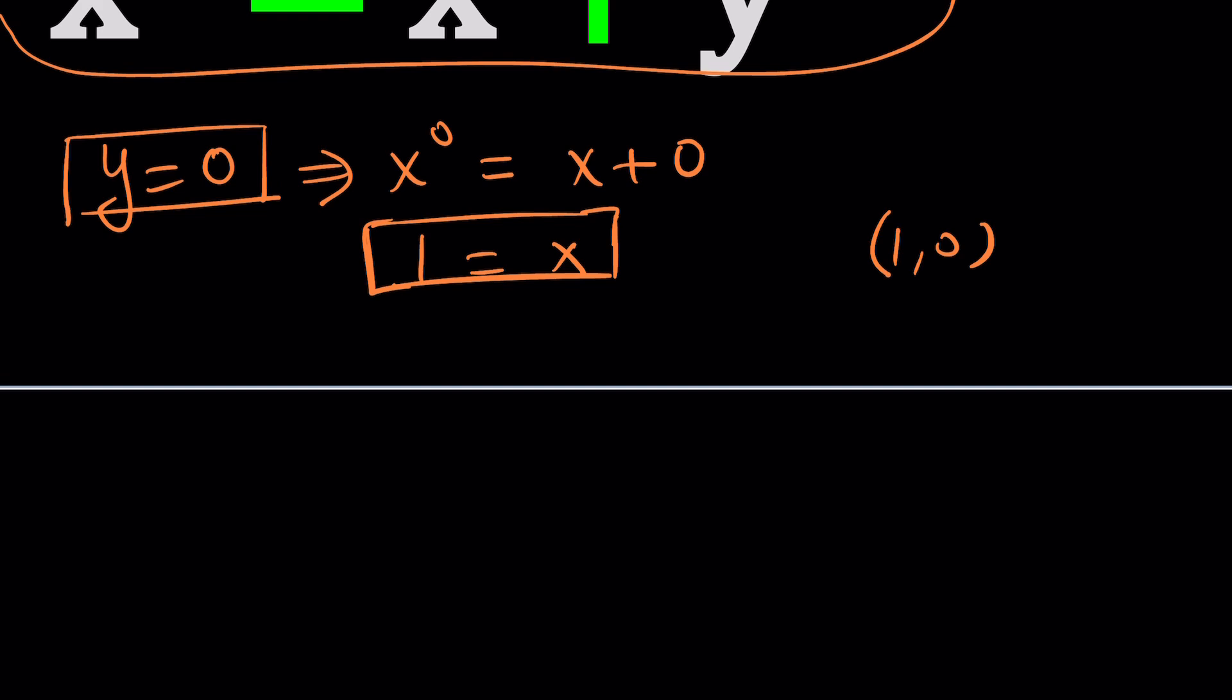Let's continue. y equals 1 would probably be a good choice. y equals 1 gives us x to the power 1 equals x plus 1. This gives us x equals x plus 1. This is not even true for complex values. No solution whatsoever. You're totally going to reject it because a number cannot be one more than the same number. So y equals 1 didn't give us anything, which means y cannot be one.